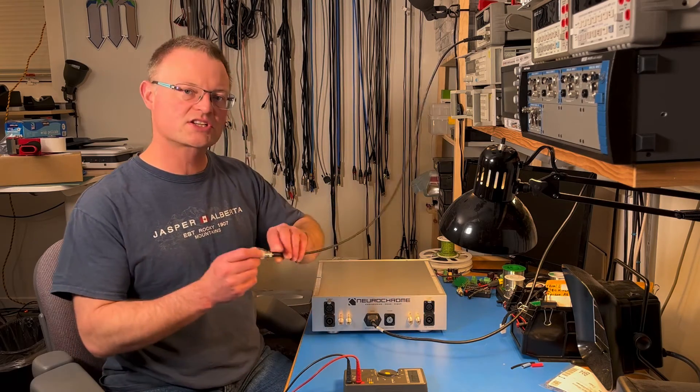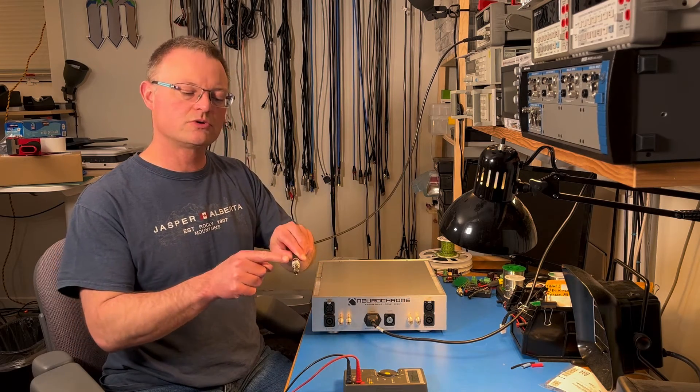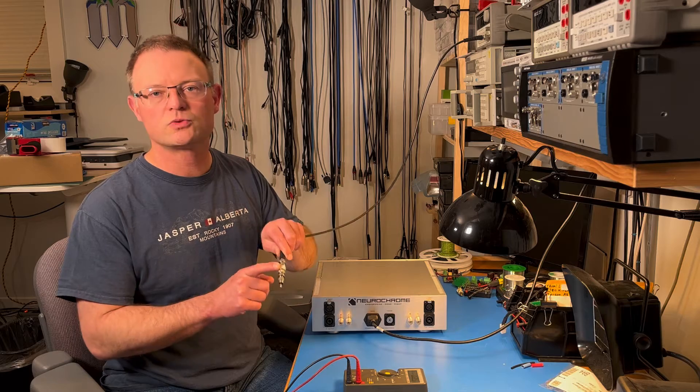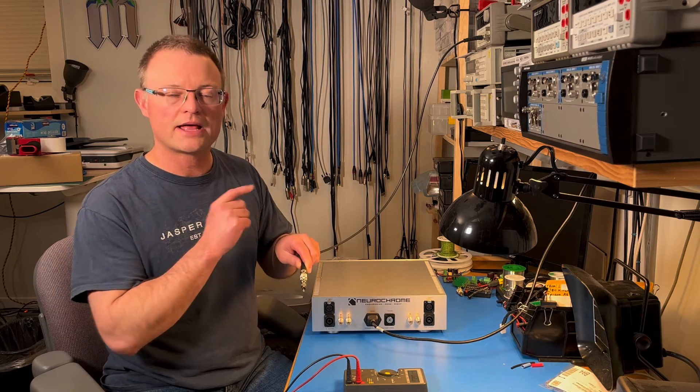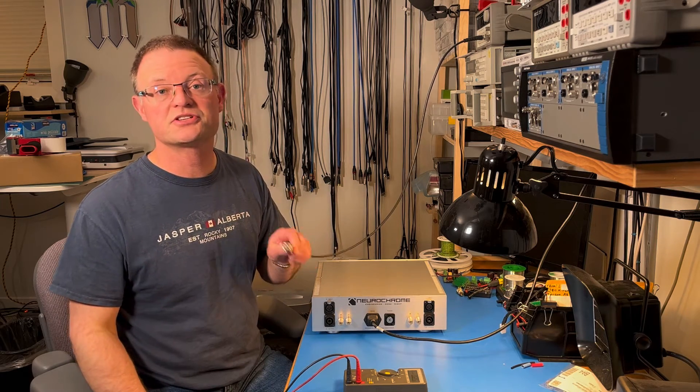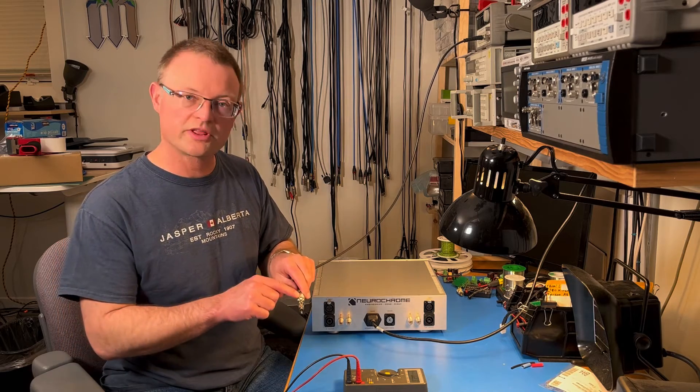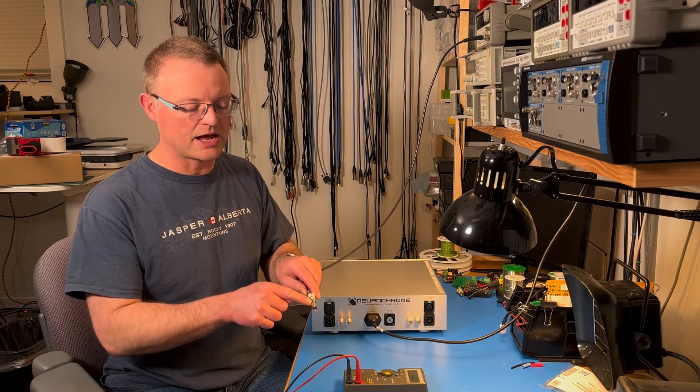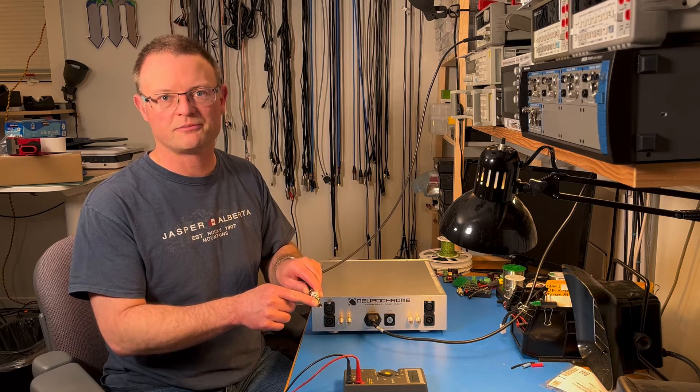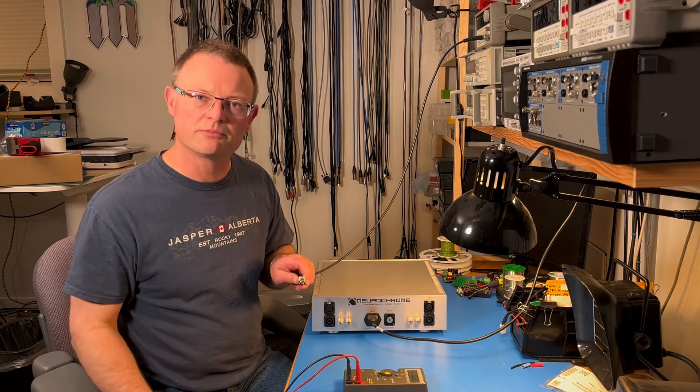That comes down this coax cable and goes through a feed through terminator. Because one thing you got to know about laboratory signal generators is that they require termination. So the terminator handles that. And then I adapt to an RCA connector. That will need to connect to the input of the amp.